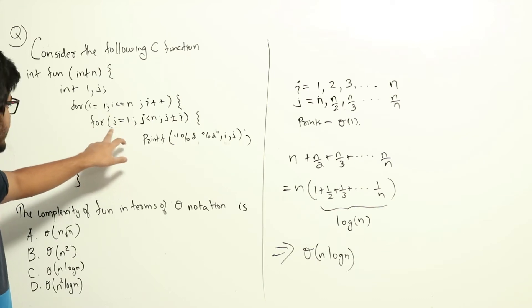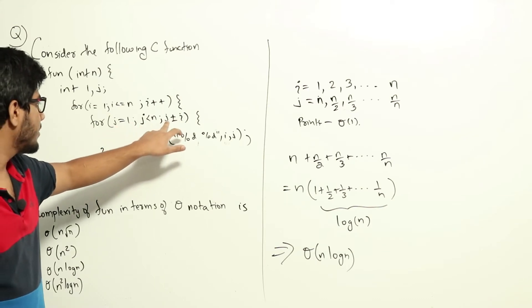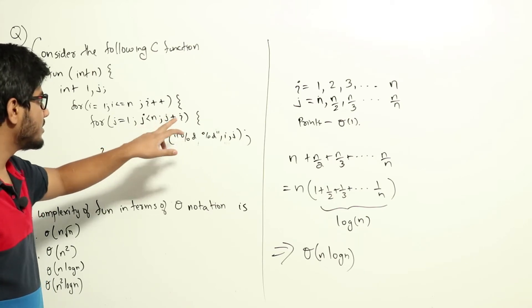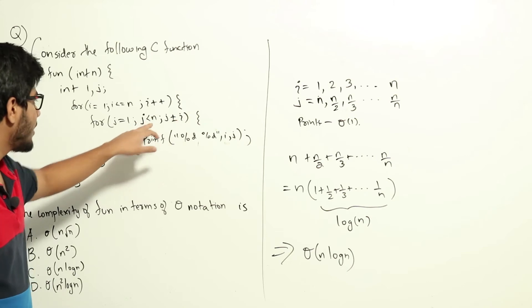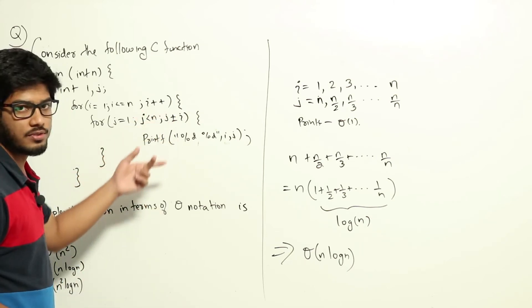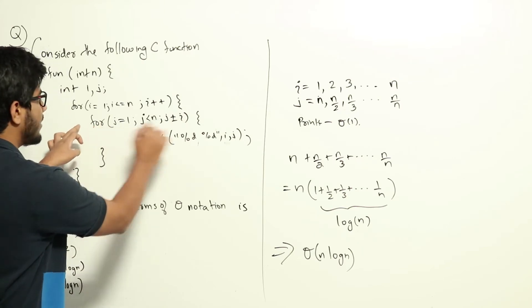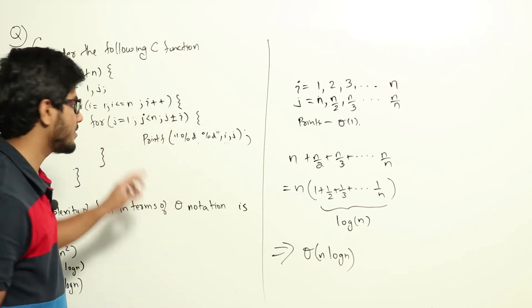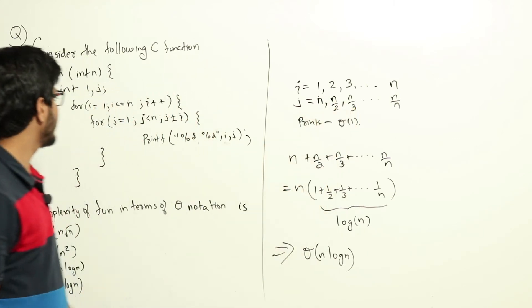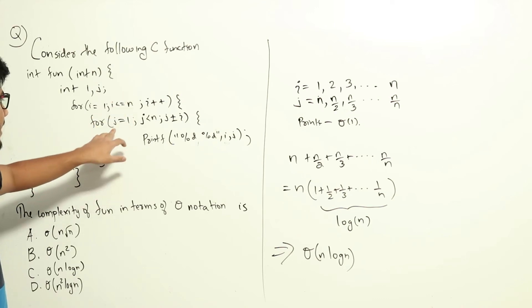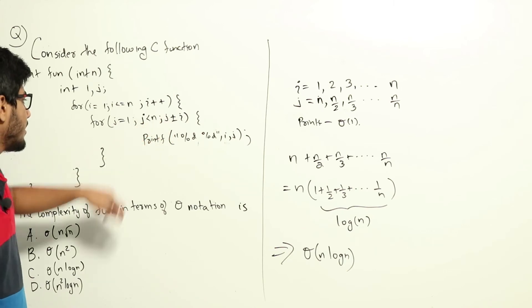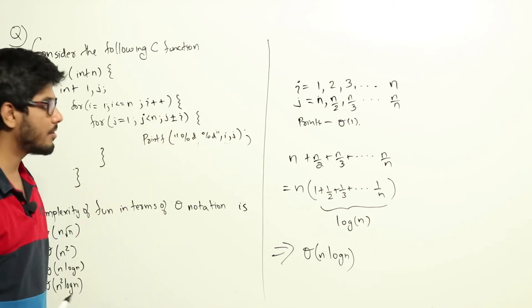When i is 2, j starts at 1 then increases by 2 each time: 1, 3, 5, and so on up to n. So j increases in 2s up to n, meaning j can take n/2 different values. When i is 3, j increments by 3 up to n, so j will take n/3 different values.